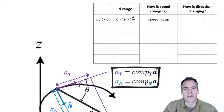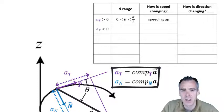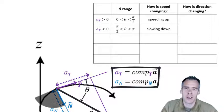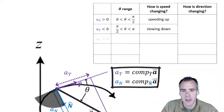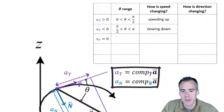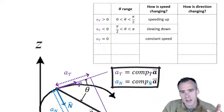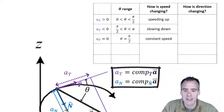If a_T is less than zero, the object is slowing down, and theta is going to be between pi over two and pi. And if a_T equals zero — just like with the orbiting satellite at constant speed — theta is exactly pi over two.